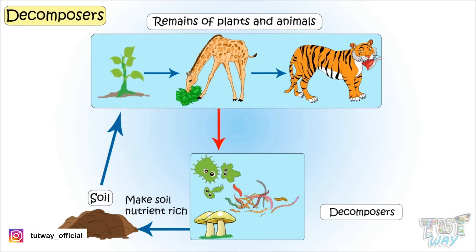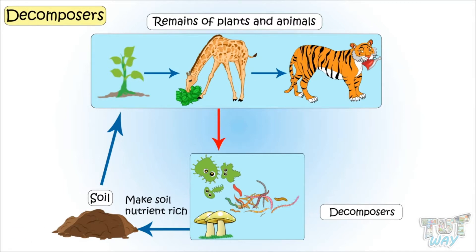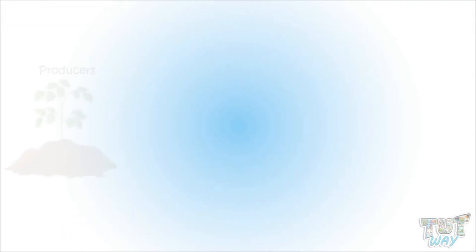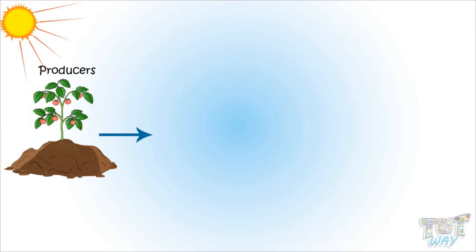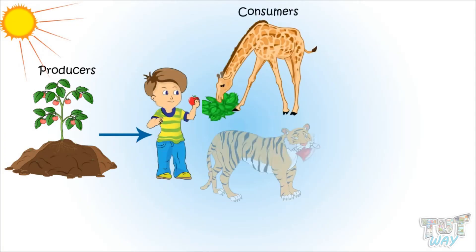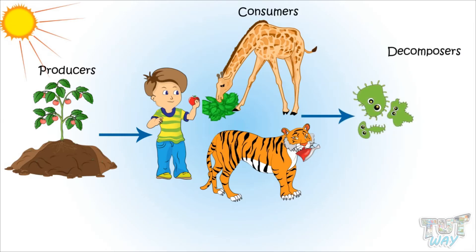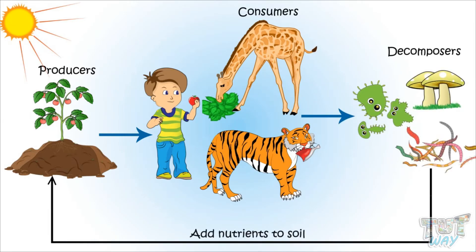Thus, there is a flow of energy in the form of a cycle that never ends. It starts with the producers that use the nutrients from the soil and sunlight to produce food. These producers provide food for all the consumers, and when all the consumers die, decomposers convert them into nutrients and add them back to the soil.